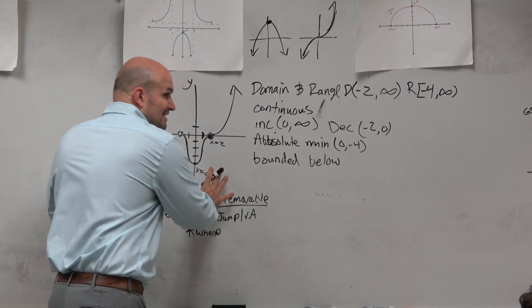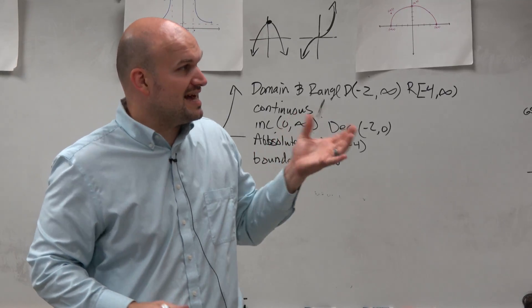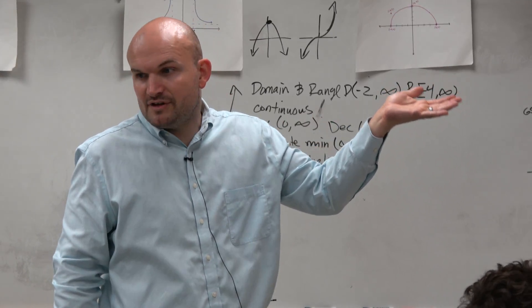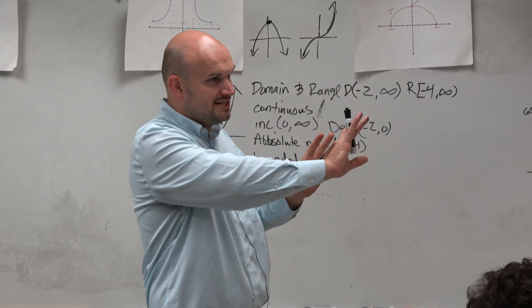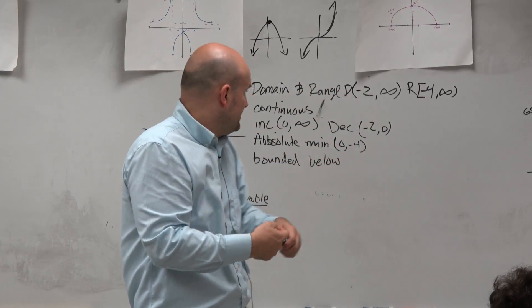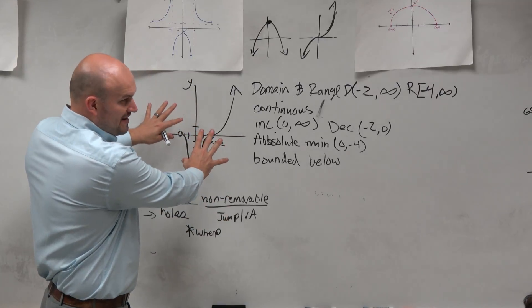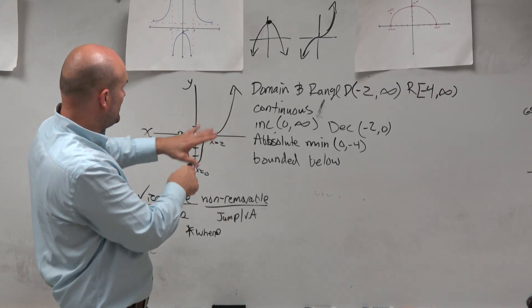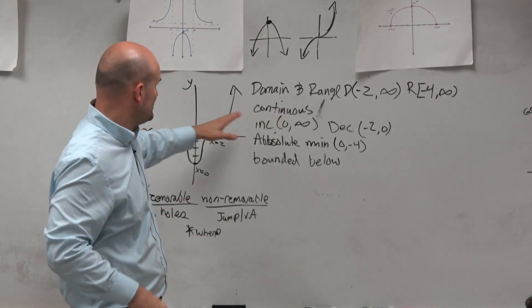If we take this graph and we zoom out, what basically end behavior is asking us, where is the graph going? As we look to the right, where is this graph going? So look at this graph. As this graph is going out, as we look to the right, where is this graph going?